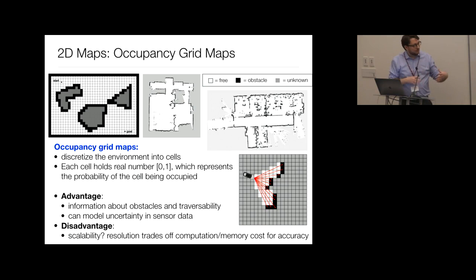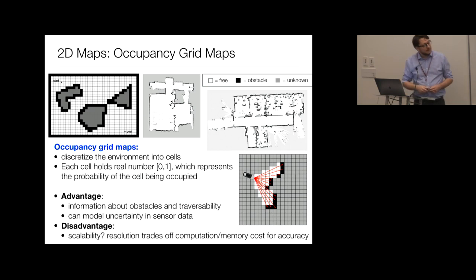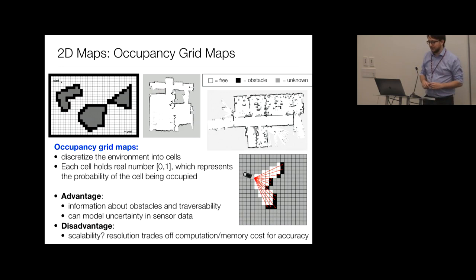The advantage of occupancy grid maps is that they provide a probabilistic representation — important because we always have uncertainty in sensor readings — and they intrinsically capture obstacle information for navigation planning. The disadvantage is that storing probability values for every cell is like storing a large 2D image; there's a trade-off between resolution, memory, and computational cost.